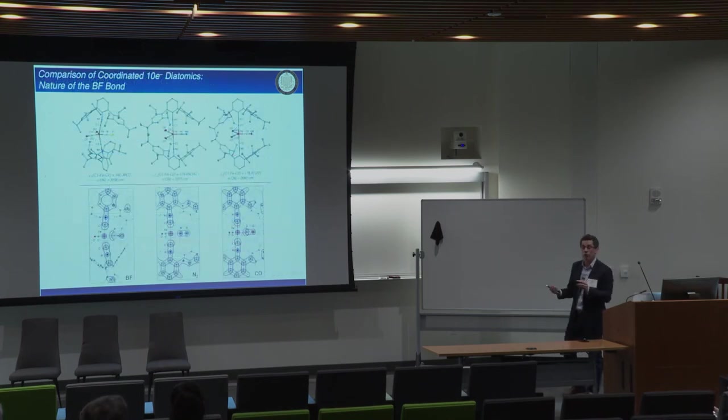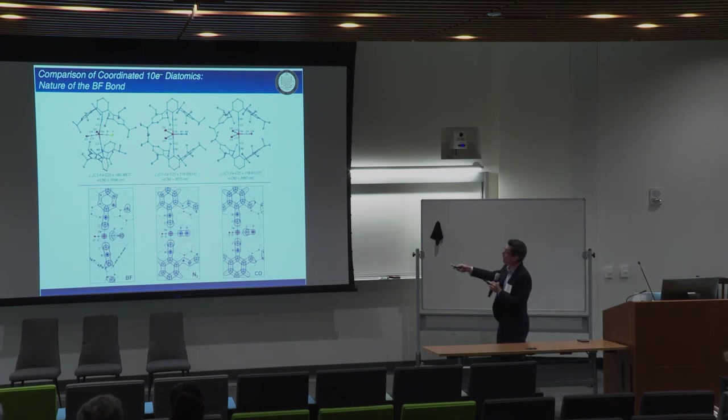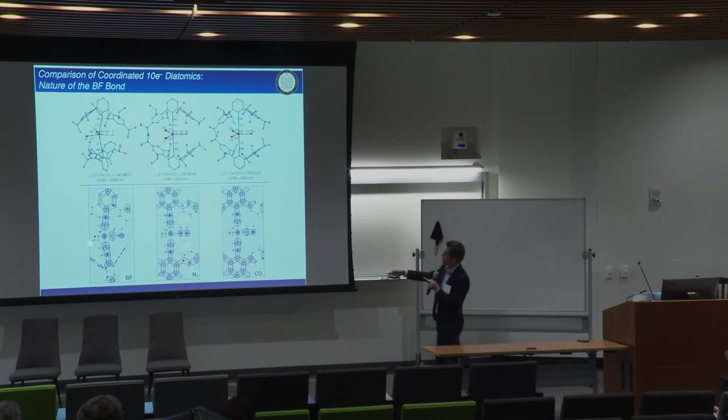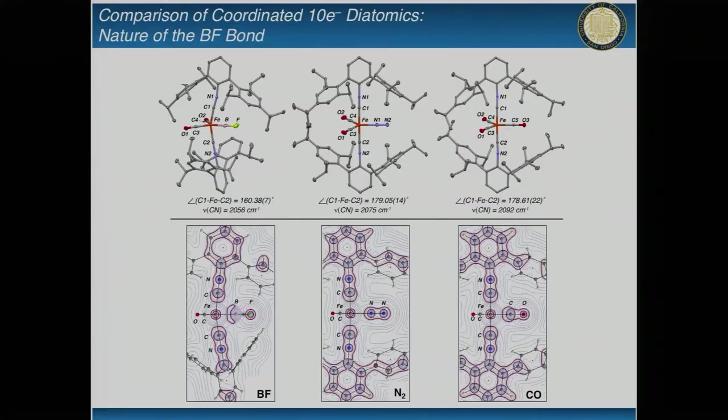In addition, we can use our synthetic talents to make compounds that are just like this. Here's that BF compound. We've also been able to prepare the corresponding dinitrogen compound and the carbon monoxide compound. Now you can compare these 10-electron diatomics on the exact same transition metal platform. You don't have to be an expert to see these plots here, where dinitrogen has solid lines which are very symmetrical. When you go to carbon monoxide, it skews a little bit because of polarity. BF looks a lot different than these two.